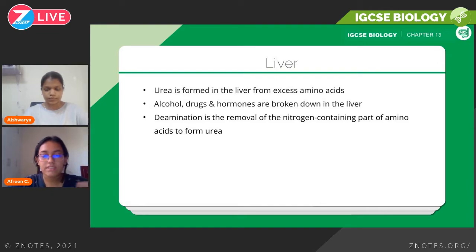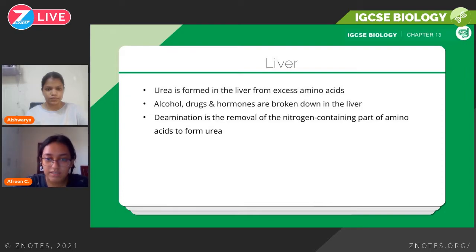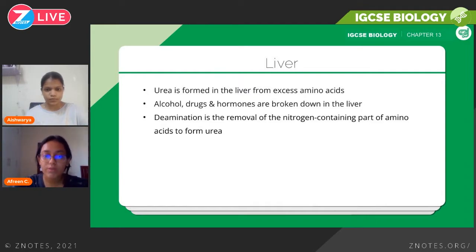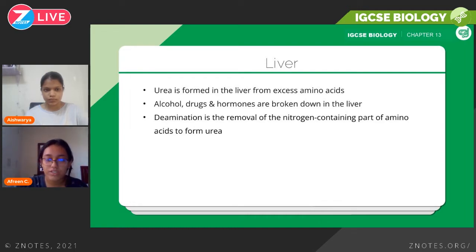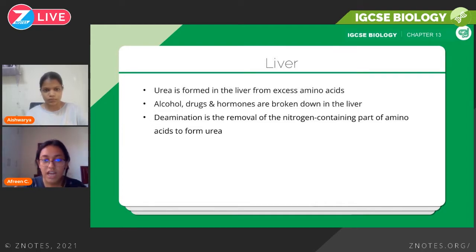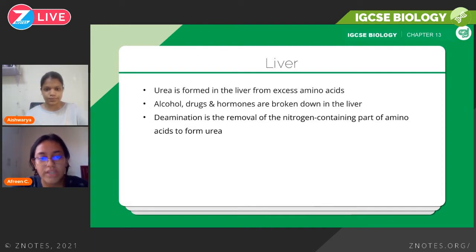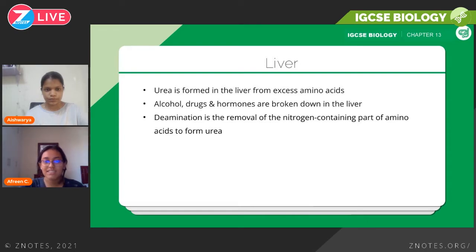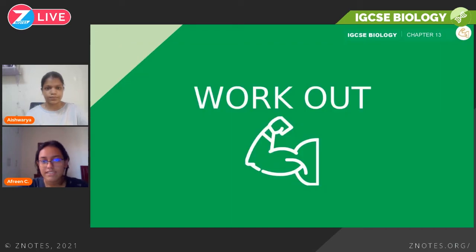How is urea formed? It's through a process known as deamination. Urea is formed in the liver from excess amino acids — it's basically the removal of the nitrogen-containing parts of amino acids to form urea. Amino acids have a nitrogen-containing part and a carbon-containing part; the carbon-containing part is used for energy storage, and the nitrogen-containing part is transformed into urea because it's a safer way of storing it. However, it's not safe for long periods, which is why it needs to be excreted via the urethra. Another important point: alcohols, drugs, and hormones are all broken down in the liver, which is why you sometimes see these substances in urine as well.